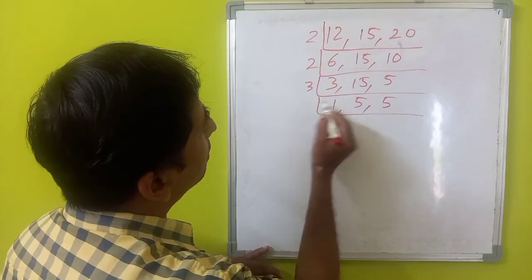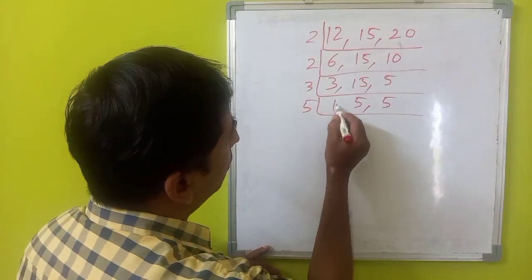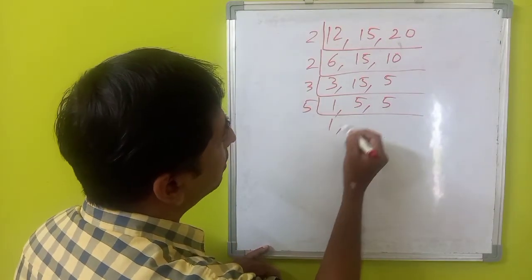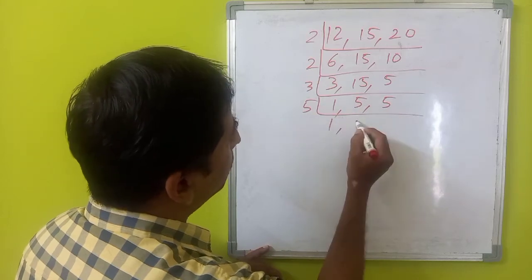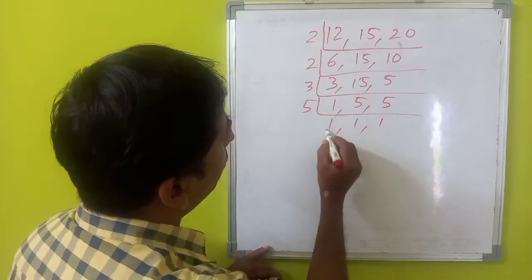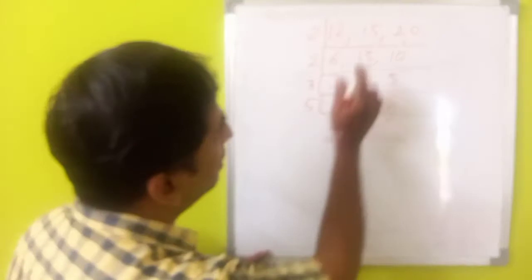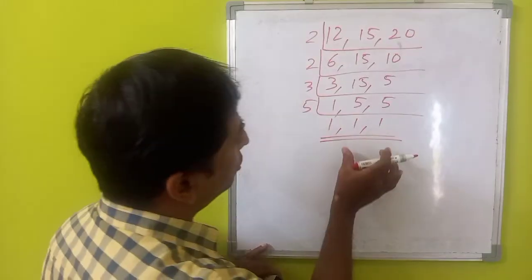Now, again divisible by 5 now. This is already 1. So, we will write it as it is. Now, 5 is divisible by 5. We will get it 1. 5 again 1. Now, as we get 1 in all these numbers, we can just stop it.